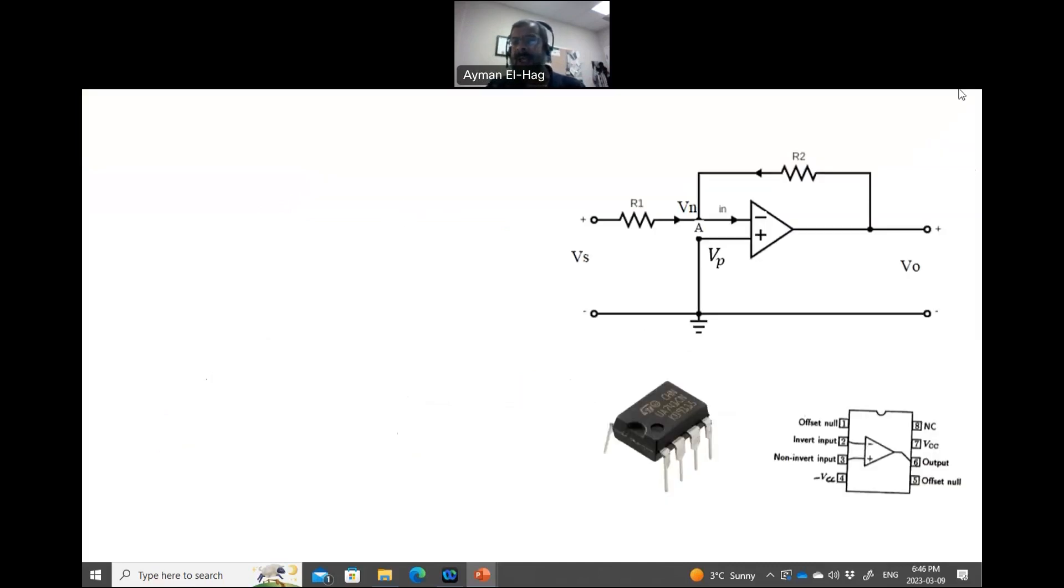So this is my inverting amplifier circuit. So as you can see here, we have the operational amplifier. This operational amplifier is connected to an input voltage, and here it will be a DC voltage. And this is your output.